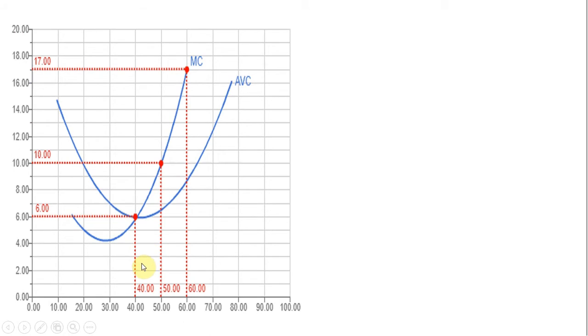So the main thing to note is that the supply curve of a competitive firm is its marginal cost curve. It's technically that portion of the marginal cost curve that lies above average variable cost.